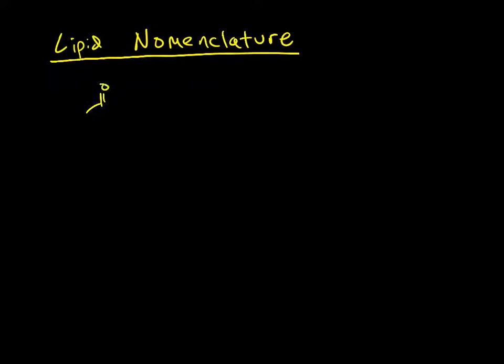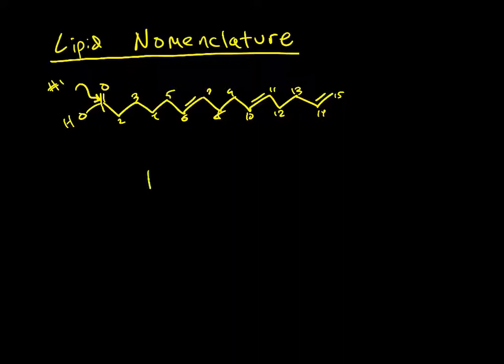A lot of times we're going to be given a long carbon chain and we're going to have to name our lipid. The way we do that is we start at the carboxylic acid carbon. This is going to be our number 1. And then from there we count the total number of carbons. So this will be 15.